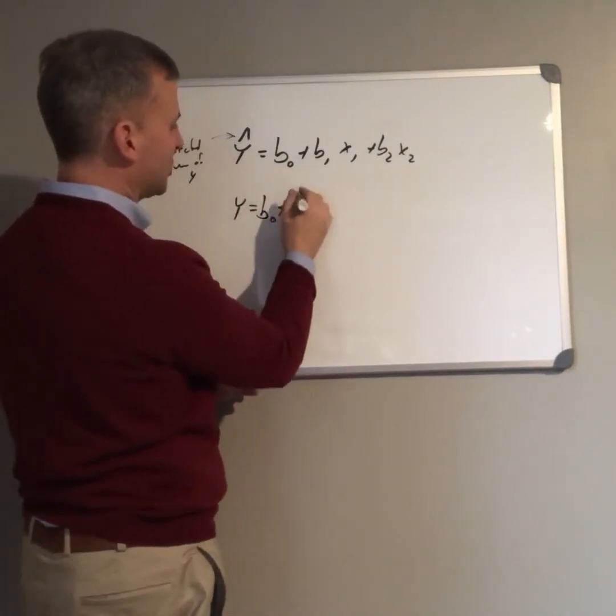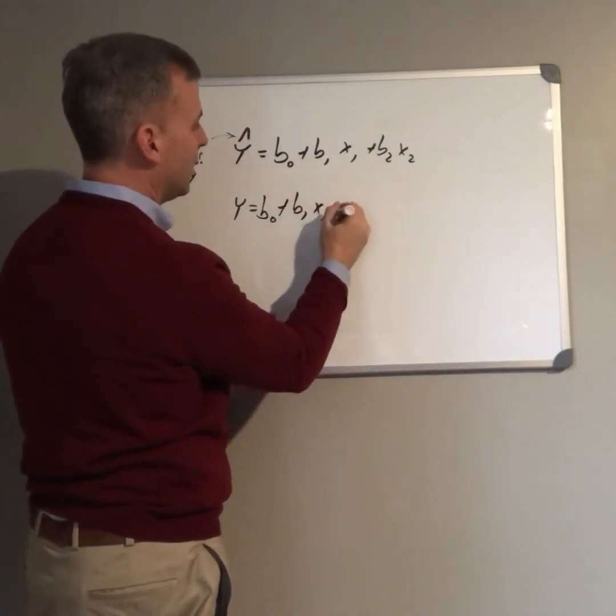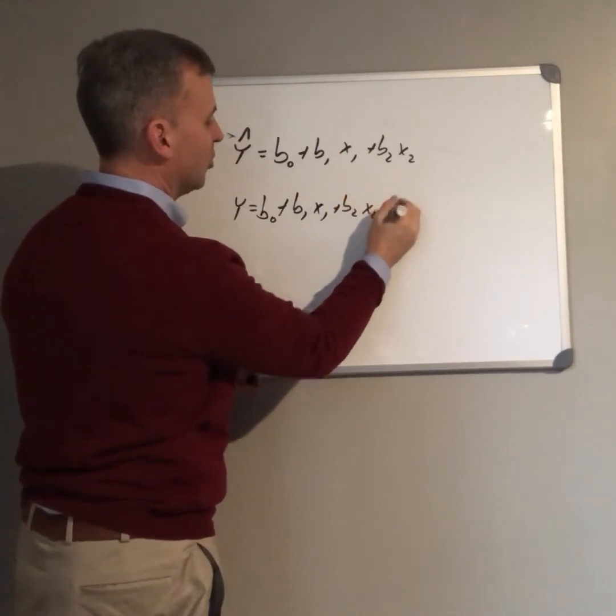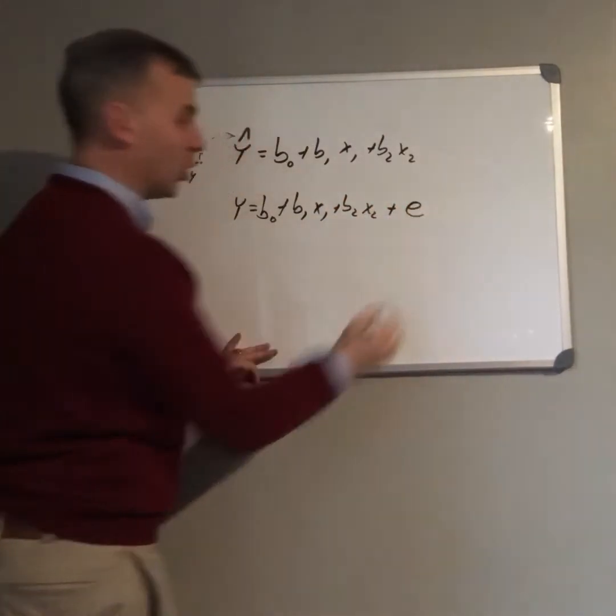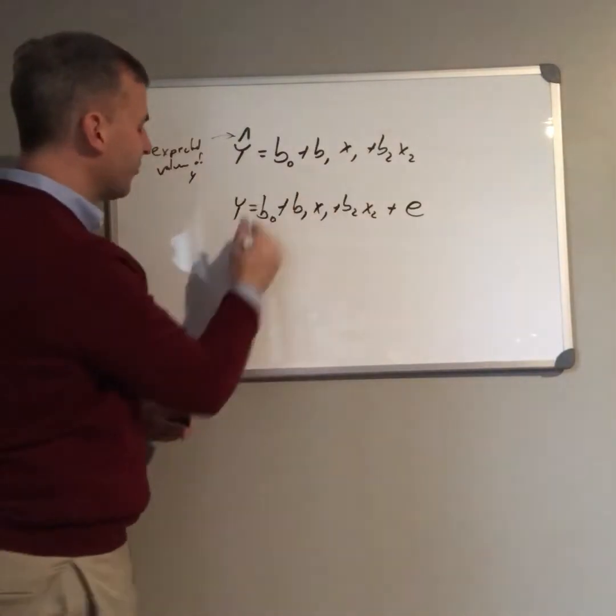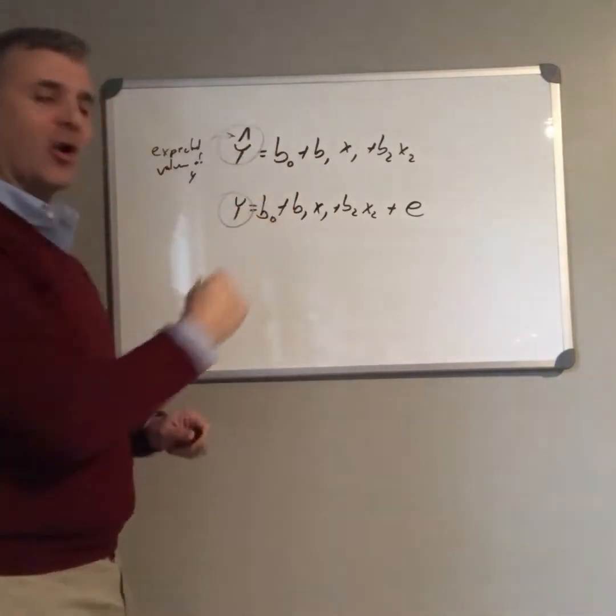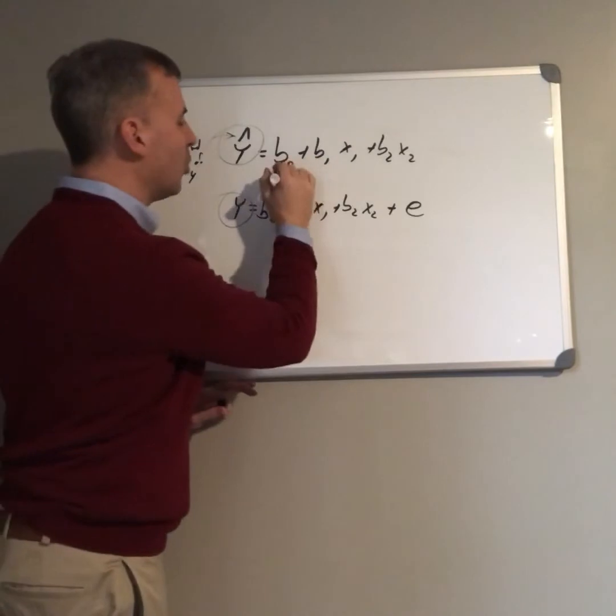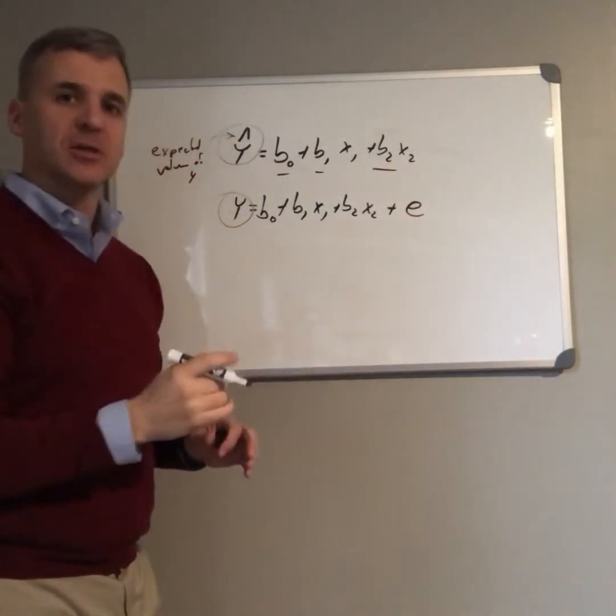y is actually b sub 0 plus b1 x1 plus b2 x2 plus some error term. So there's a difference between the actual and our estimate. Our estimate is only based on our regression, and our regression gives us an estimate.